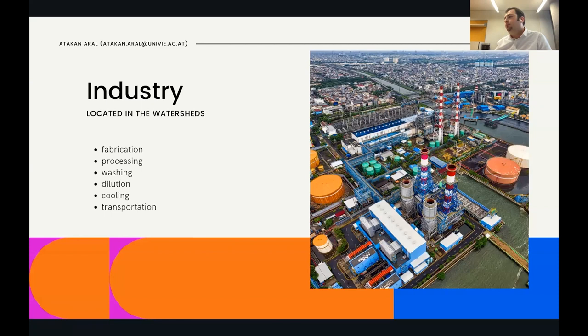Many industrial facilities are located in watersheds — the area of land that drains water into a specific water body, in our case a river. These industrial facilities are located near rivers for a specific reason: they use substantial amounts of water for various purposes in their process.